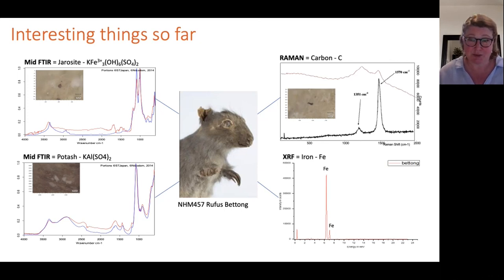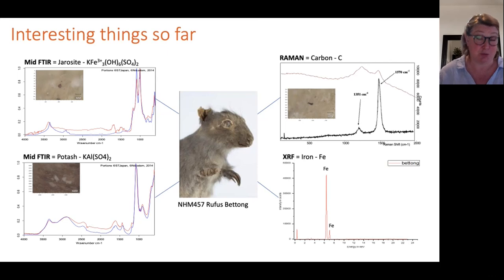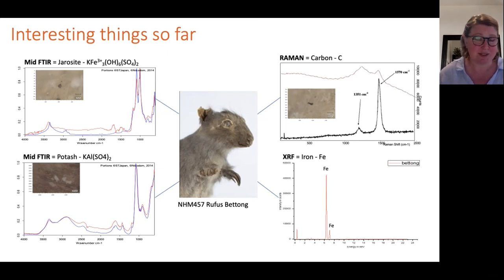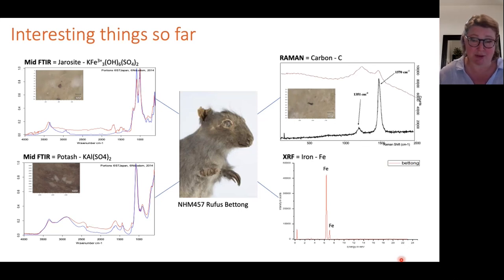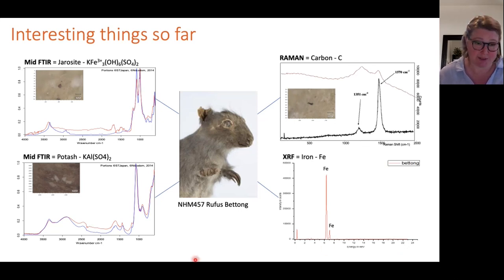In the rufous bettong we found iron sulphate, aluminium sulphate and a carbonised material that may have been burnt prior to use. Some old recipes include preservatives that should be burnt before application, and I'm wondering whether this carbonised material might be one of those.